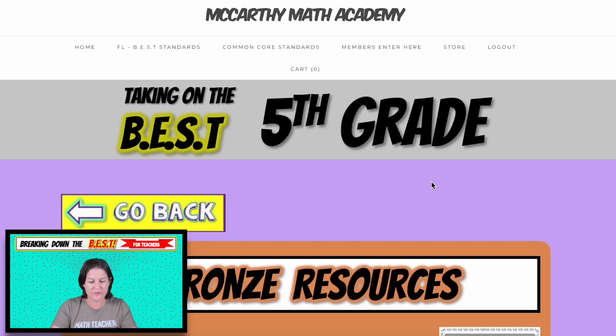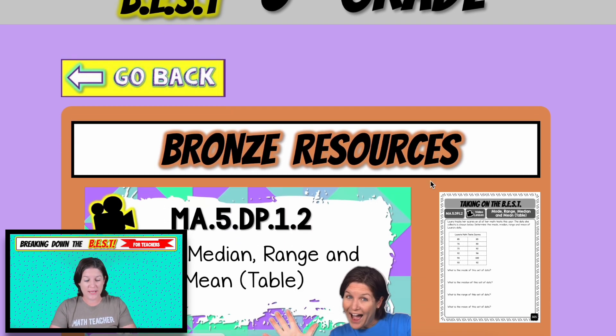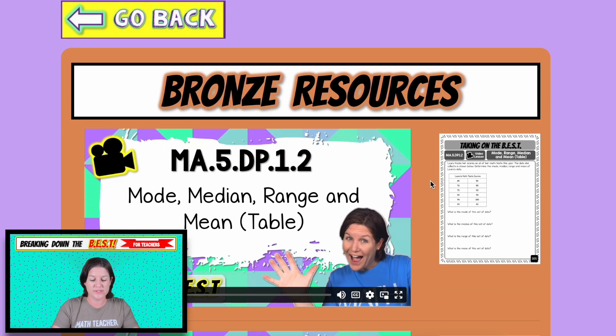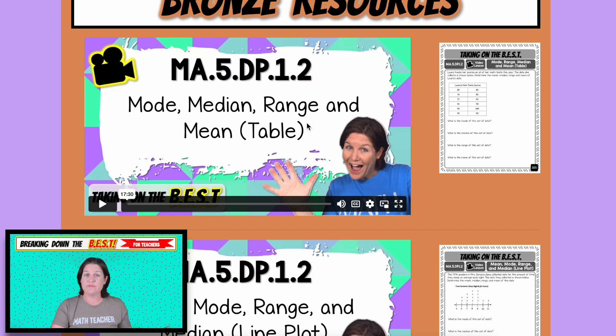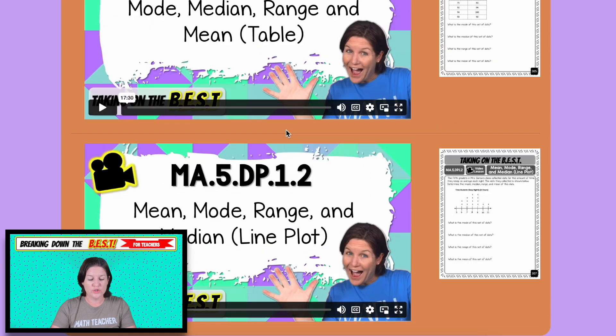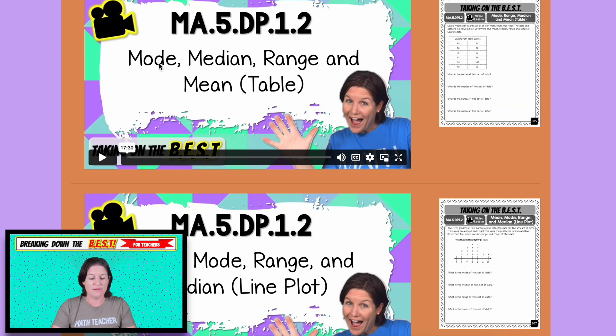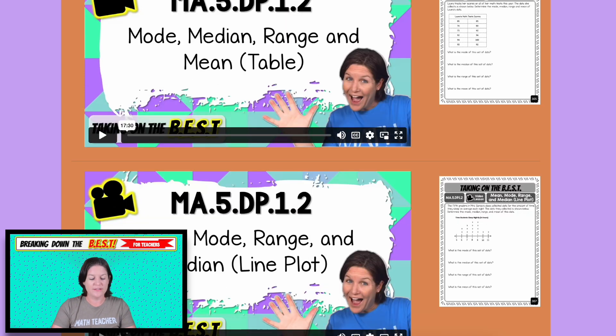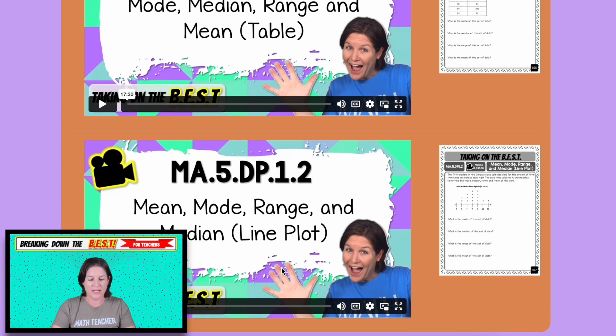When we click that, the first page that opens up is your bronze page. It's your bronze level of resources. The bronze level includes the video lessons and the printable student guides that go along with the lessons. So we have one, two video lessons, finding the mode, median, range, and mean in a table, and finding the mean, mode, range, and median of a line plot.